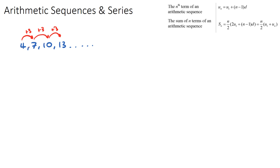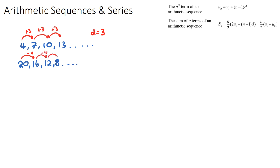The letter d is used to denote the common difference. In this case d equals positive three, which is important when using arithmetic sequence formulas. Another example of an arithmetic sequence is one that goes down: 20, 16, 12, 8, ... This is also an arithmetic sequence but this time the common difference is negative four.